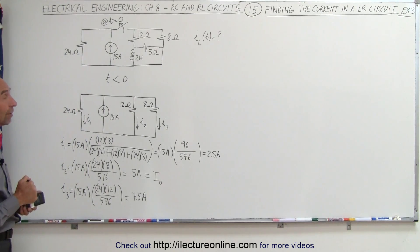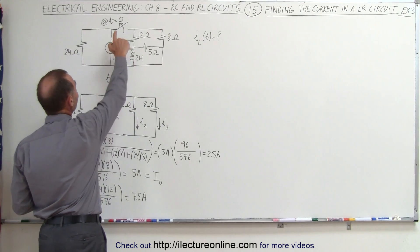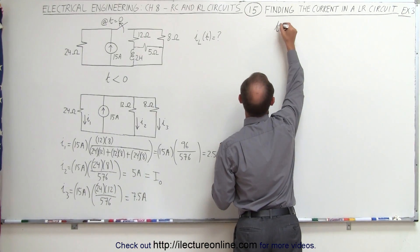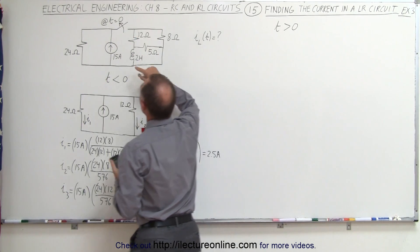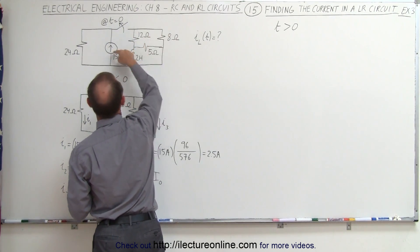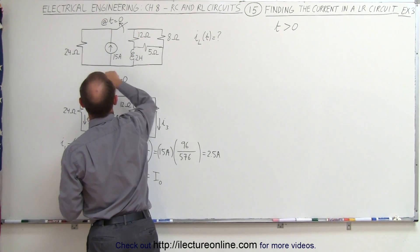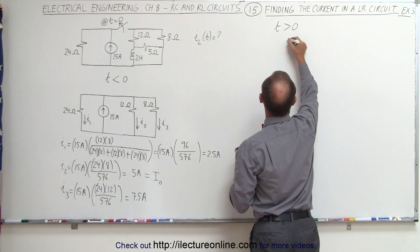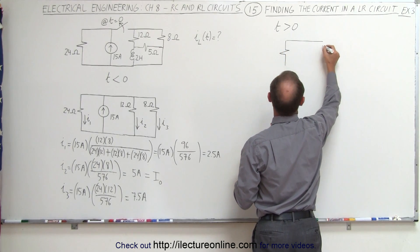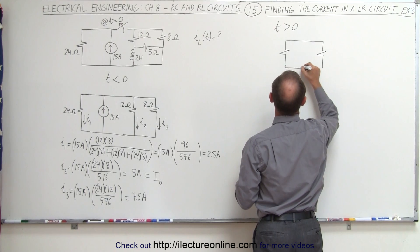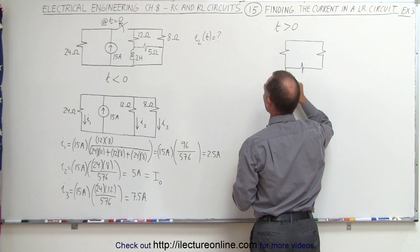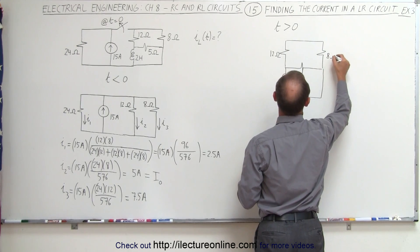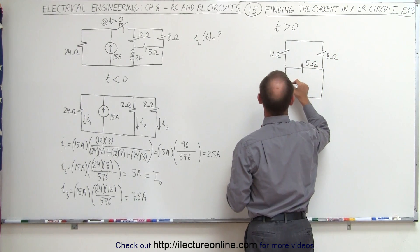Now we still need to find the time constant. To do that, we're going to draw the circuit after the switch opens, find the equivalent circuit, and find the time constant. At T greater than zero, we open the switch. That means the 15-amp current source is now isolated from this part of the circuit — it simply drives current through the 24-ohm resistor and back. The remaining loop has a 12-ohm resistor, an 8-ohm resistor, a 5-ohm resistor, and a 2-Henry inductor.